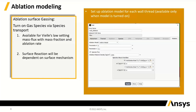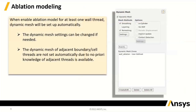We now have the capability to set up VL's law with mass flux from the surface based on mass fractions. This can be set up as a constant or as an expression based on temperature or some other function, working alongside the recession rate calculated from the empirical model. Surface reactions have that built into the mechanism, implicitly calculating species based on the surface air chemistry being used.